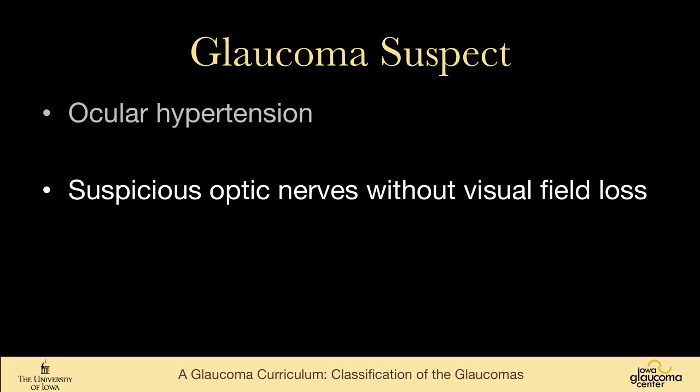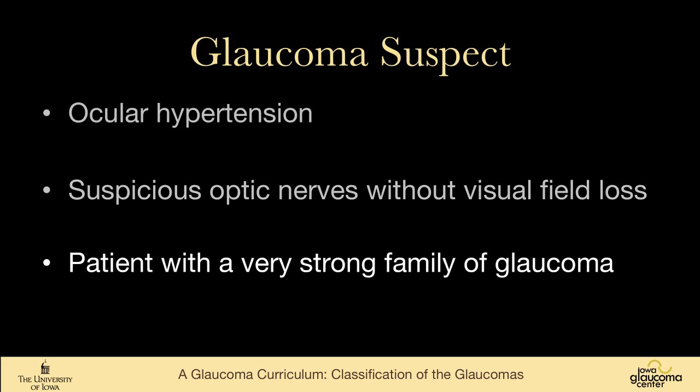One can have suspicious-looking nerves without visual field loss — some people call that pre-perimetric glaucoma, a term I don't particularly like. New imaging modalities like OCT have helped differentiate those people into being probably normal or being glaucomatous. People who have a very strong family history of glaucoma can also be considered glaucoma suspects, as they have a higher than baseline risk of developing glaucoma.